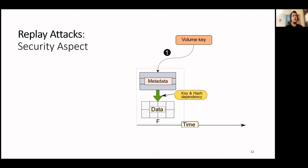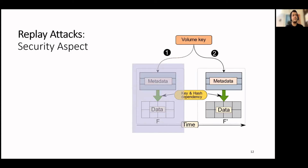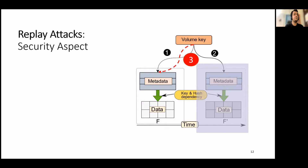We will now see a replay attack on the design of current systems. A secure file system volume consists of the data and the metadata in encrypted form. A user can mount the volume by providing the volume key. Suppose the user mounts the volume, changes the state of the volume to F, and unmounts the volume. The volume key is used to decrypt the data and metadata while mounting and re-encrypt it while unmounting. Subsequently, the user mounts the volume again and changes the state from F to F-dash and unmounts. In a replay attack, an attacker can replay the old encrypted blocks of the file system. The file system has no way of figuring out that this is old data, as the hash dependency between the data and the metadata is still valid. We were able to mount this attack on all the prior work.